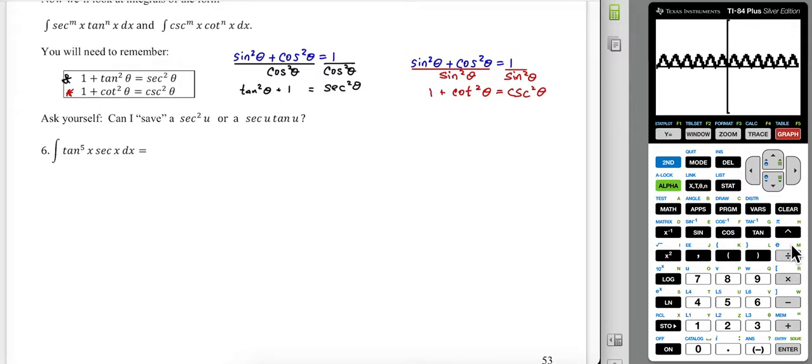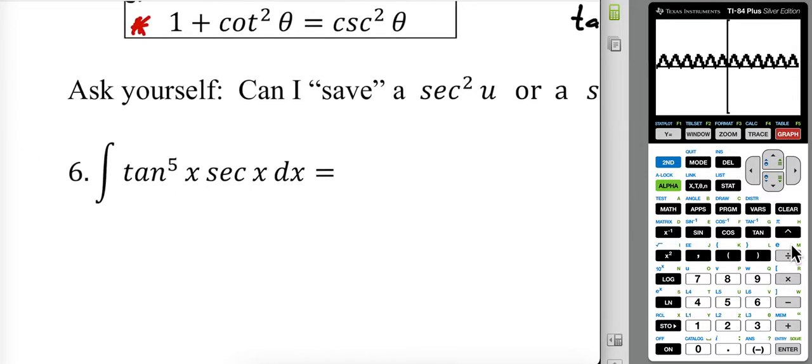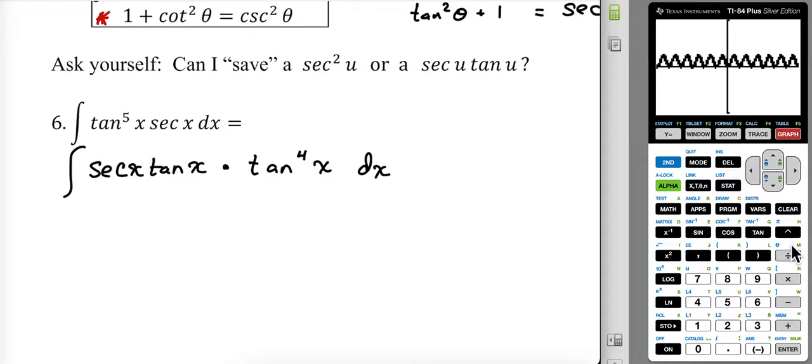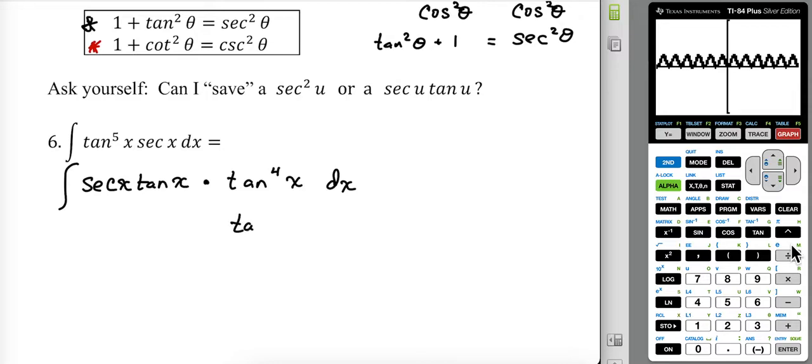Secant squared, I'm not going to be able to save without some kind of substitution happening first. So let me see about the secant tangent. I'm going to save a secant x tangent x, and if I do that, I'll have a tangent to the fourth of x. Maybe this is the wrong way to go, maybe it's not. Sometimes with these problems, you have to go down one pathway to realize it's not the right pathway. But I see I don't have a rule for tangent to the fourth. I do have a rule for tangent squared. Tangent squared squared equals tangent to the fourth.